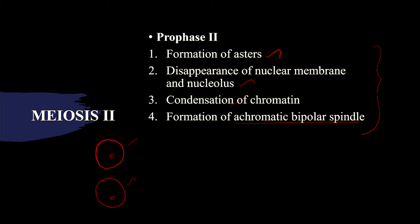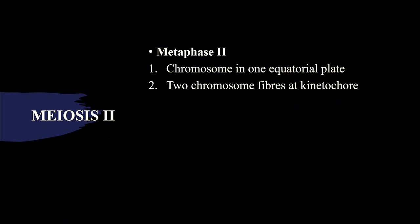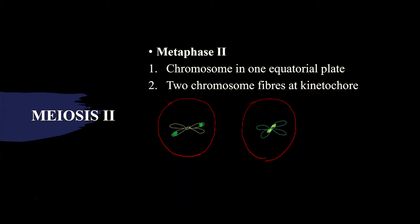Now let's enter into metaphase II. Here the chromosomes are going to be in one plate called the equatorial plate or metaphase plate. There will be fibers attached at the kinetochore.